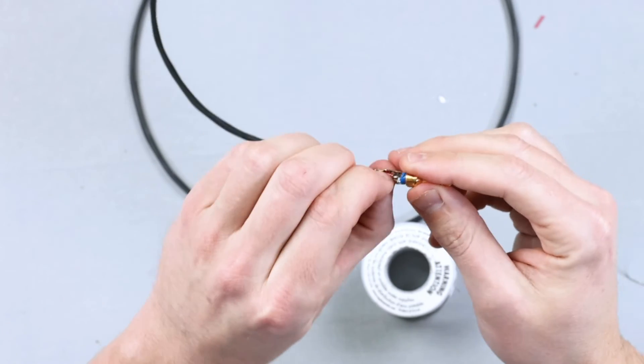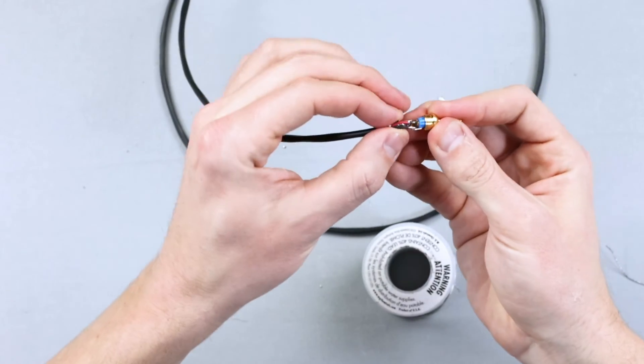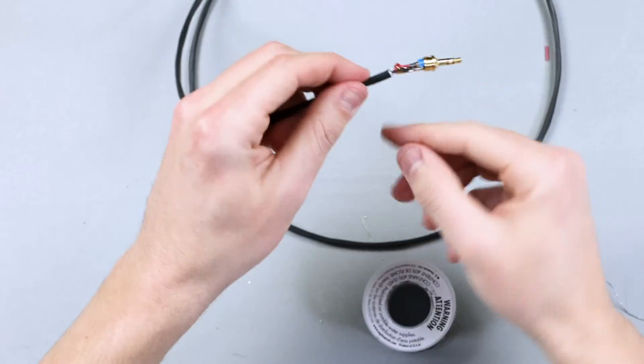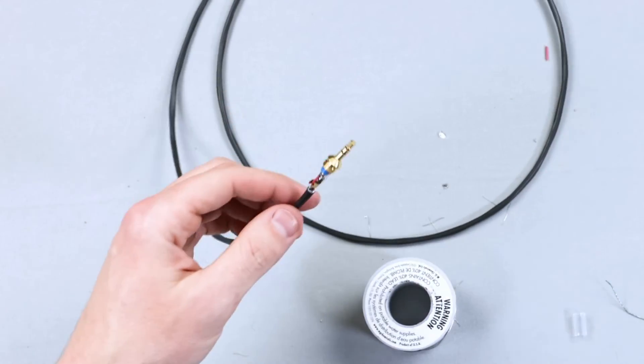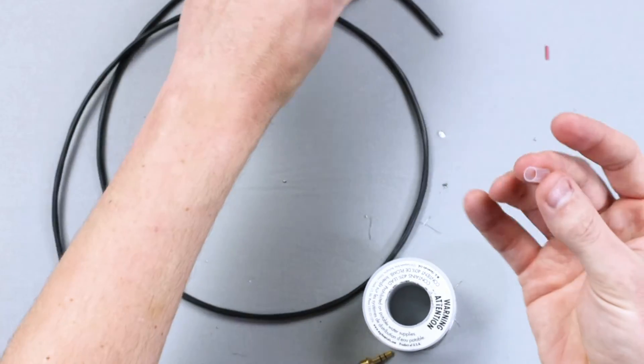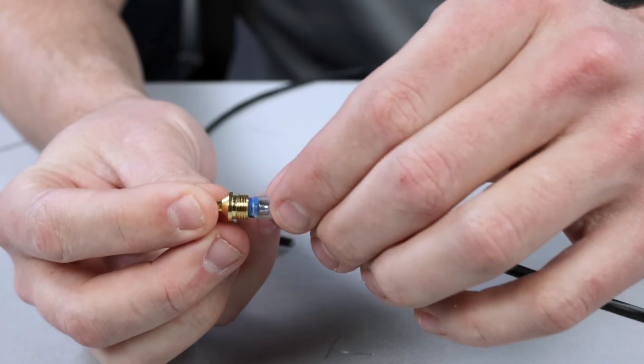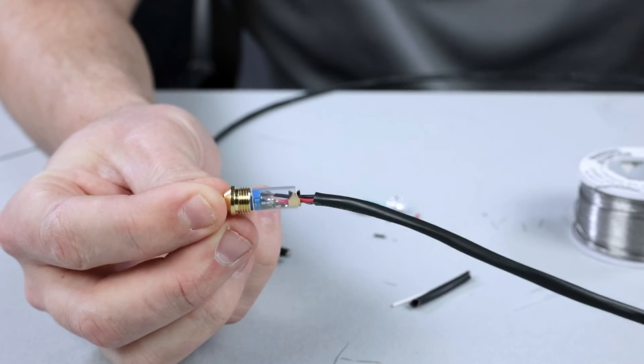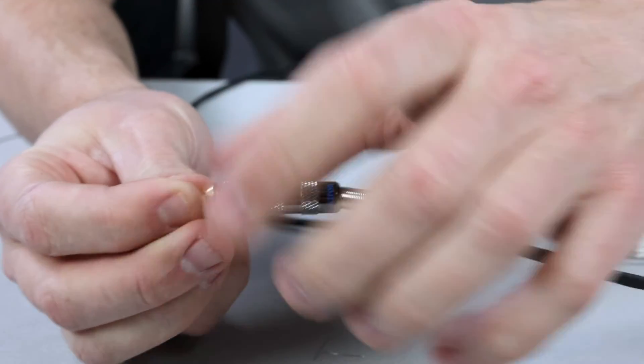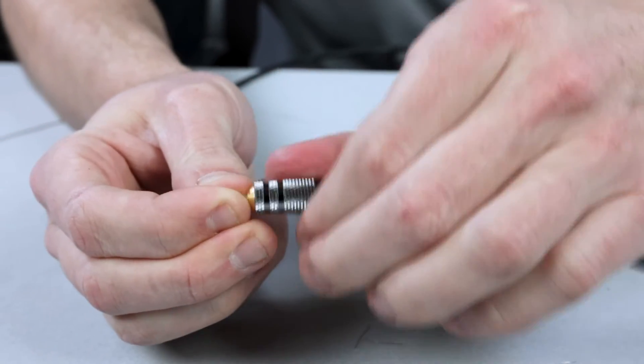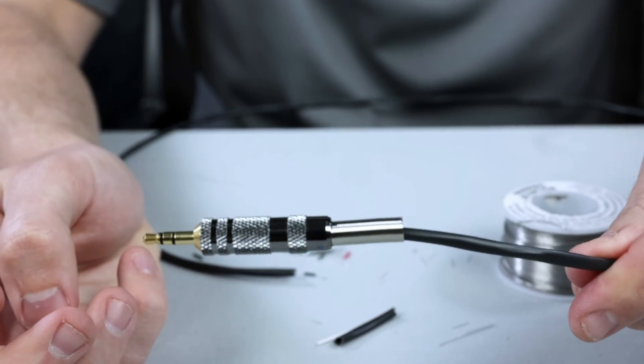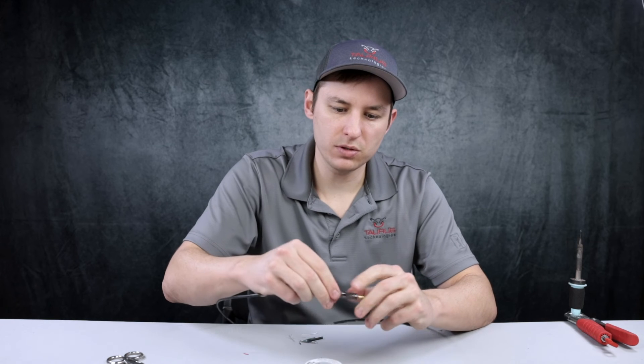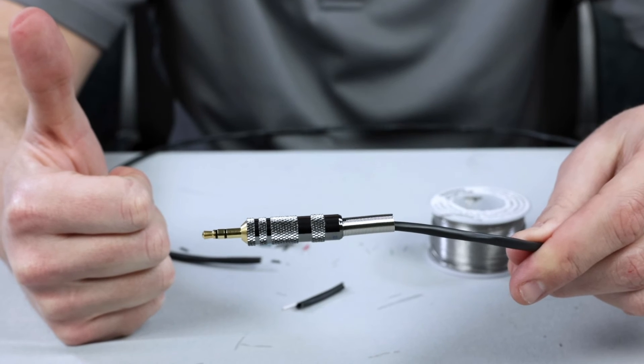So now what you got to do is, these are the strain reliefs. You just have to pinch those onto the actual conductors and it will keep the connector and keep the solders from coming undone. So now what you do is you take the shielding, slide it down the wire, put it over everything like that. The second piece of it goes like that. You just twist it on. Final step is to pull this out and that's how you make a 3.5.